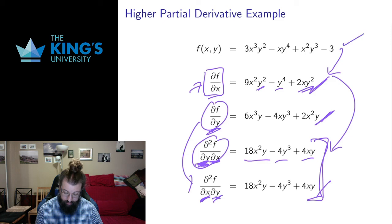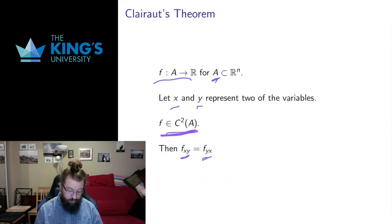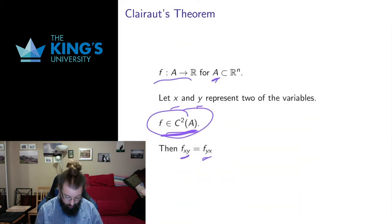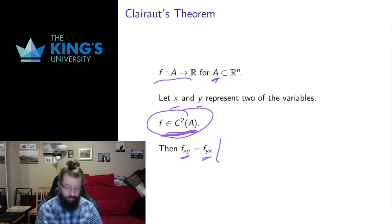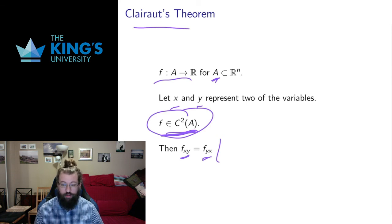If I have a scalar field defined on some domain in R^n, and x and y are two of the variables, as long as all of the second partials exist, then I can actually interchange the order of the mixed partials — I can do x and then y, or y and then x, and get exactly the same thing. This is true here because this is a polynomial, so all of its derivatives exist. This theorem says the second derivatives need to exist, and under that condition the order of the derivatives can be changed. This is called Clairaut's theorem, and it's quite useful because sometimes one order of derivatives is much easier to compute.